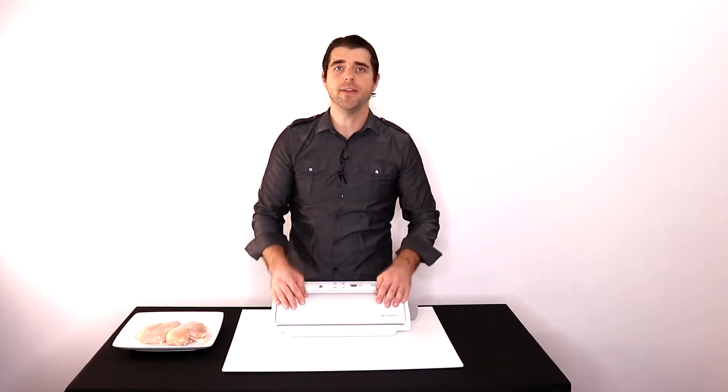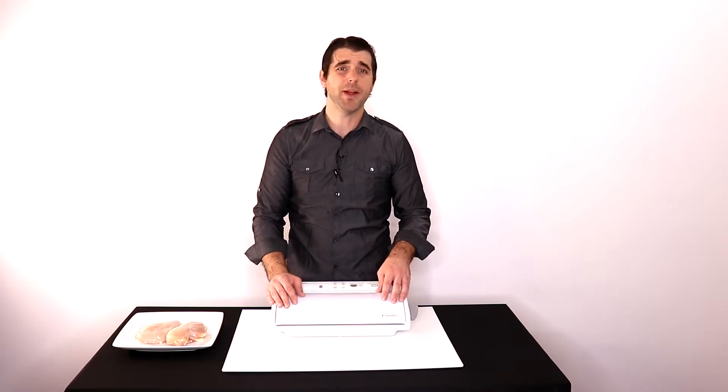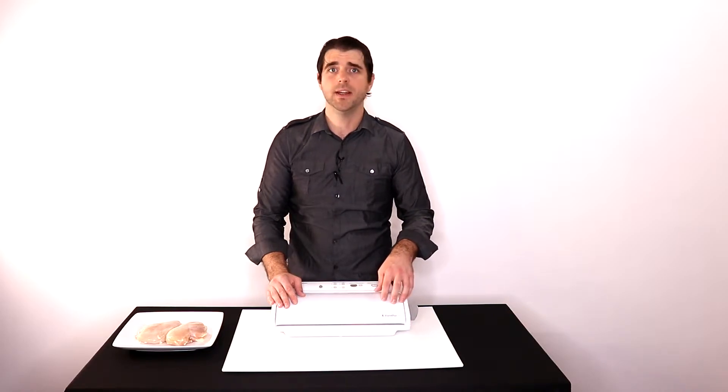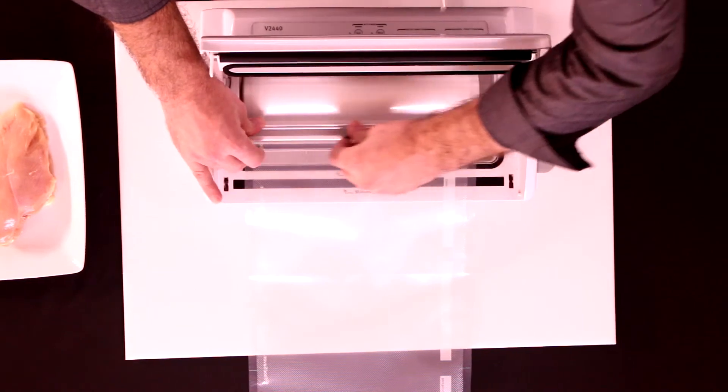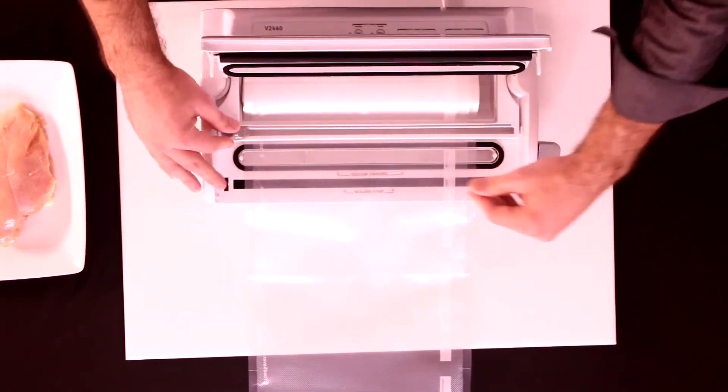To get started, all you need is a vacuum sealer. You can use pretty much any brand. I have a food saver. I've had this for about eight years, and I have really vacuum packaged a lot of stuff with it. Pull out a generous length of your sealing material.